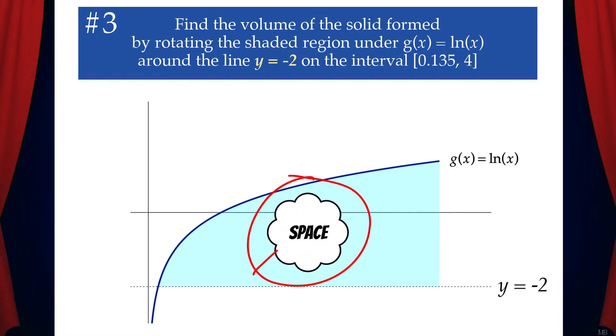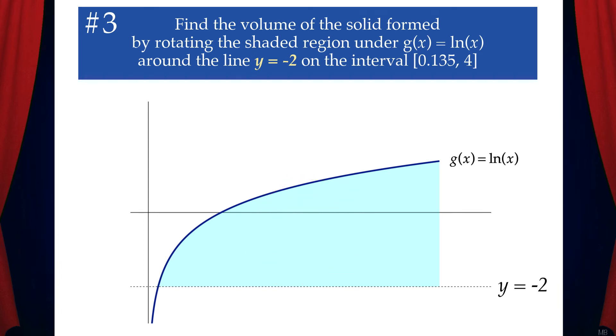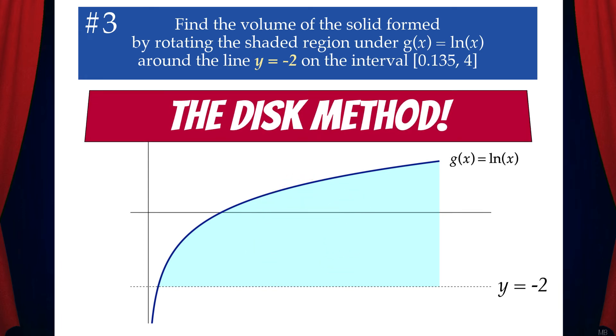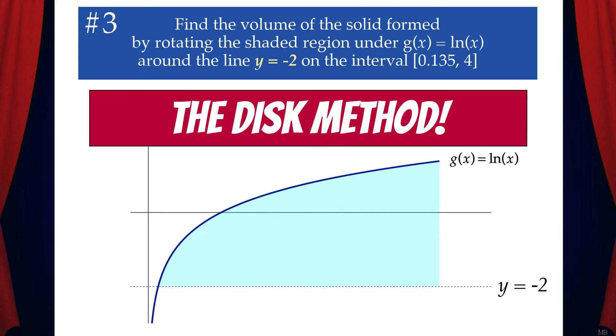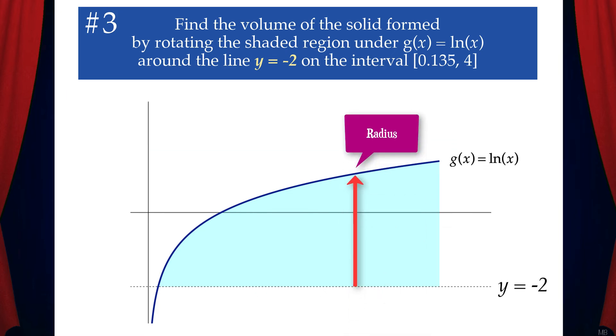In this case, there's no space between the axis of rotation and the region itself. That means we'll use the disk method, so now we just need to find the radius.